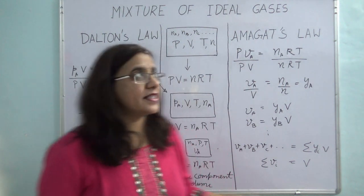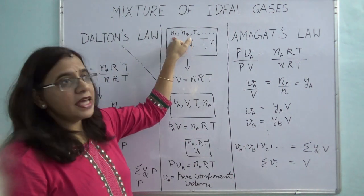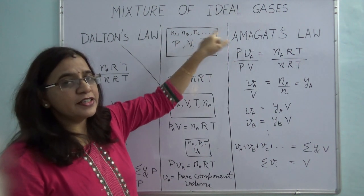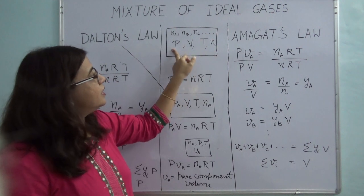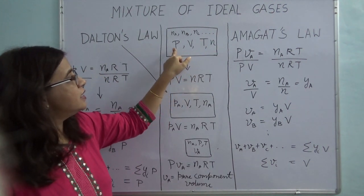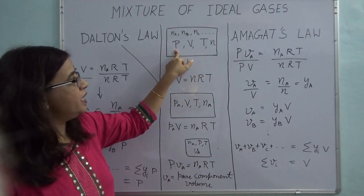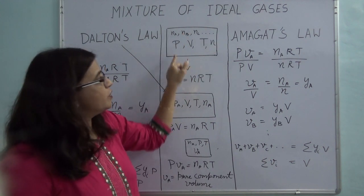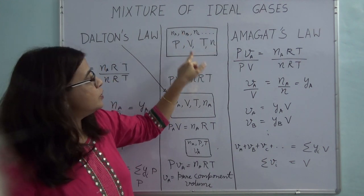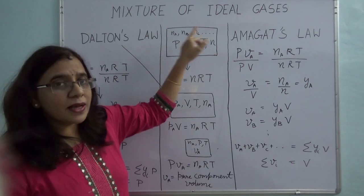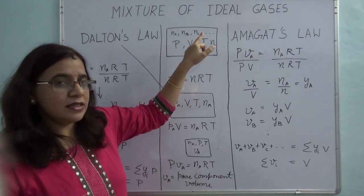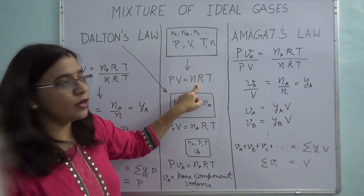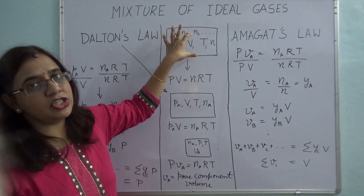Let's consider this case where I am mixing Na moles of A, Nb moles of B, Nc moles of C, and so on, at pressure P and temperature T. Let's say that it occupies a volume V. Because this mixture of ideal gases behaves like an ideal gas, I can write down the ideal gas equation for this mixture as well.